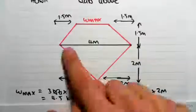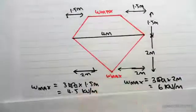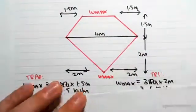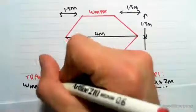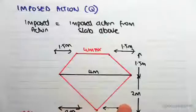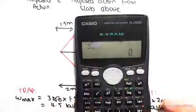W max for this triangle. So let's just make that a bit clearer. This is for the trapezium, this is for the triangle. We're going to be doing 3 kPa times by its perpendicular distance. So 3 by 2 meters is 6 kilonewtons per meter.